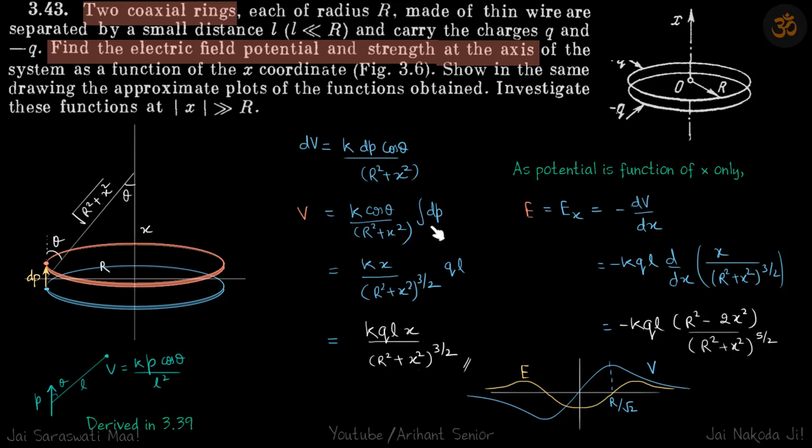Their magnitudes will get added up and this will result in QL. So this is our answer for potential at a distance x.